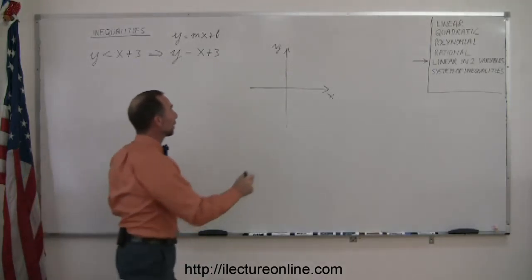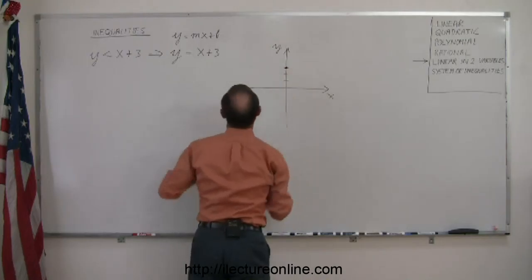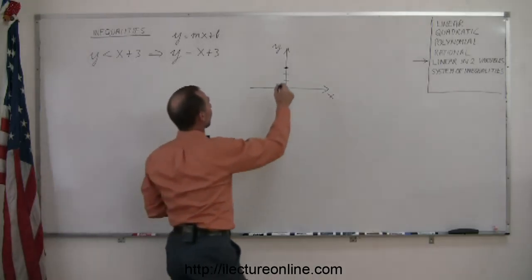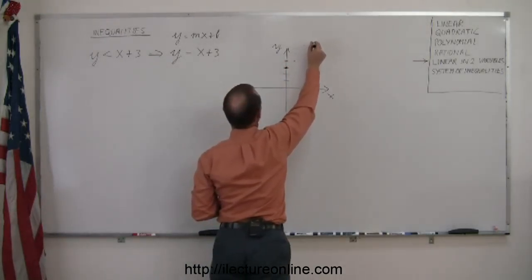So the intercept is y equals 3, that's up here. And since the slope is a positive 1, that means you have a rise of 1 and a run of 1. So when you go up 1, you go over 1, and repeat this pattern. So here are the points that are on that line.